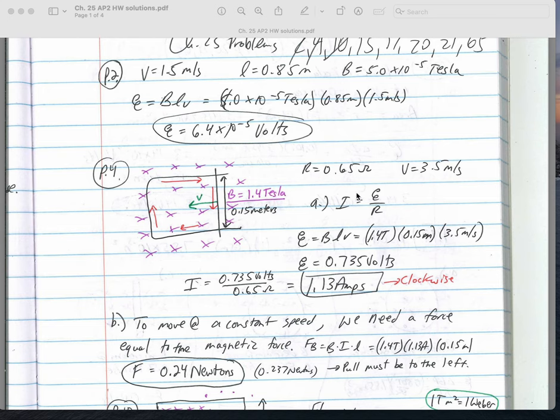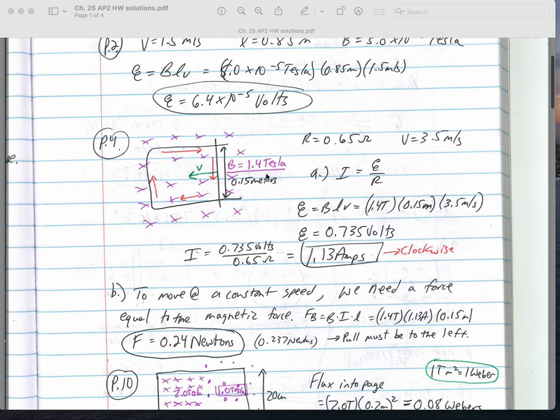For this case, the first thing we need to do is recognize this is Ohm's law, but to get Ohm's law we need the voltage which is the EMF. Once again that's going to be BLV. Because this rod is being pulled to the left, that means the flux is decreasing, so therefore it will induce a clockwise current that would add additional X's inside this area and therefore oppose the decrease in flux. We get 0.735 volts and that comes out to 1.13 amps.